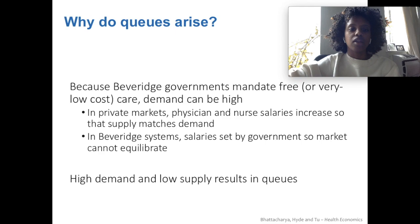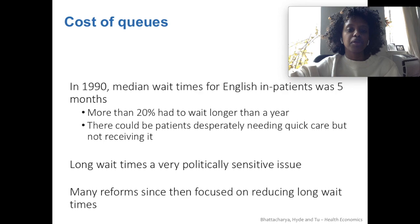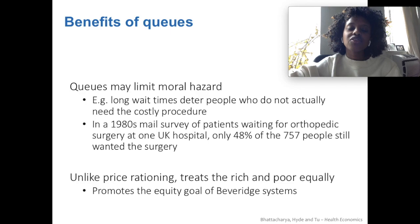Queues arise in the Beveridge system because healthcare is free, so there's a lot of demand. In the private market, they could recruit more providers by raising salaries. But in Beveridge systems, salaries are set by the government, so the market won't equilibrate. With high demand and a restricted level of supply, you end up with wait times. In 1990, median wait times for English inpatients was five months, and more than 20% had to wait a year. This meant some people who really needed care couldn't receive it — a politically sensitive issue. So many reforms have been implemented since then to reduce wait times.